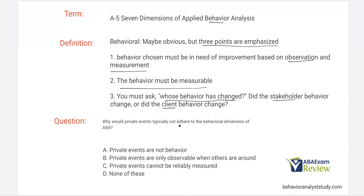Question: why would private events typically not adhere to the behavioral dimension of ABA? Private events are thoughts, feelings — things that happen inside the skin. They are behavior, but why don't we typically target them for change? Option A, private events are not behavior — incorrect, we know they are. Option B, private events are only observable when others are around — incorrect. Option C, private events cannot be reliably measured — that's the answer. Since they're internal, they can't be reliably measured, which violates the behavioral dimension.